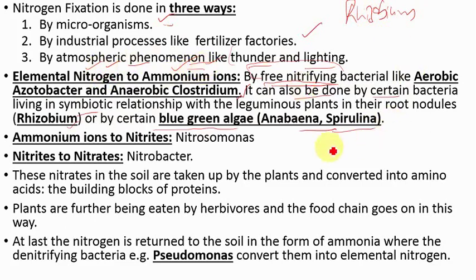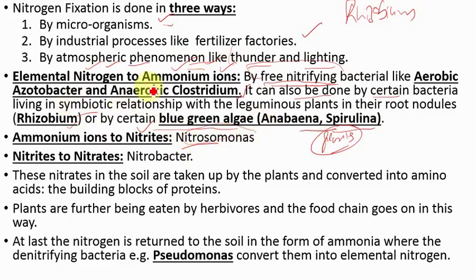Some plants have the ability to consume ammonium ions directly, but some plants still cannot — so ammonium ions need to be further modified. Ammonium ions need to be converted into nitrites. The organism that performs this work is Nitrosomonas. Nitrosomonas converts ammonium ions to nitrites, and then nitrites are converted into nitrates by Nitrobacter. These nitrates in the soil are now taken up by plants.